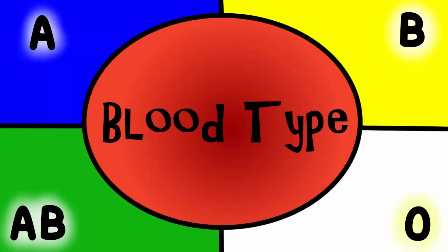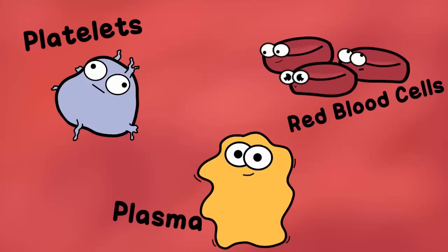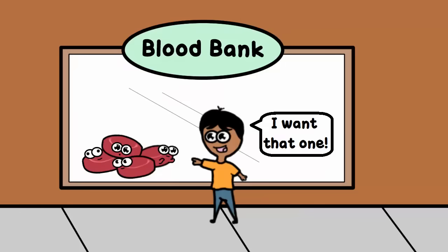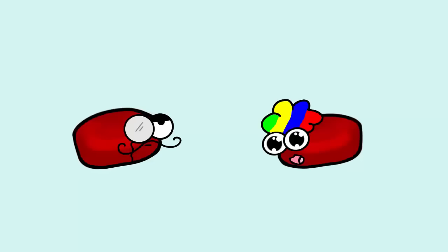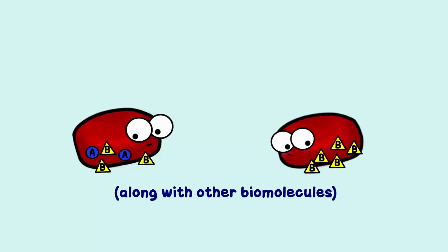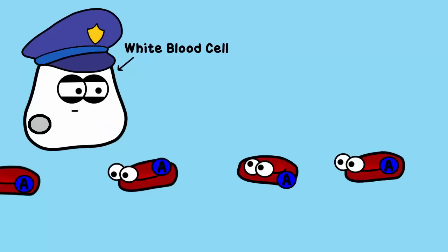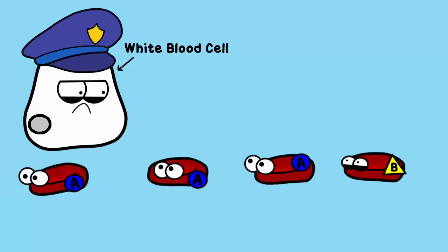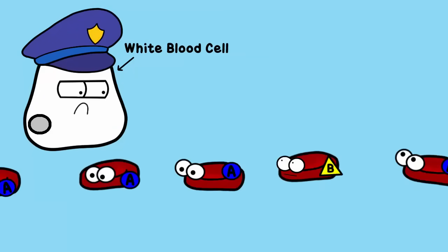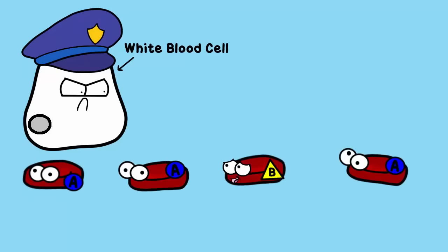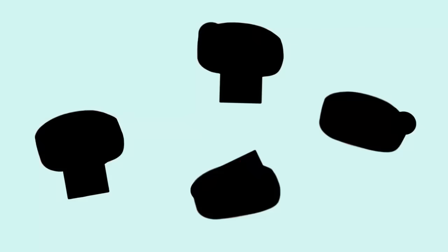Your blood is really made up of many things - platelets, plasma, red blood cells. But you've probably heard that when blood is donated, it's very important that it is matched correctly. That's true because blood type phenotypes vary. It really boils down to the fact that red blood cells are not naked - they have proteins on their surface. Your immune system is very protective, and if it gets donated blood that has different proteins it's not used to, it will attack them.